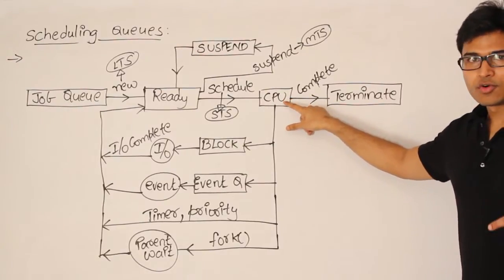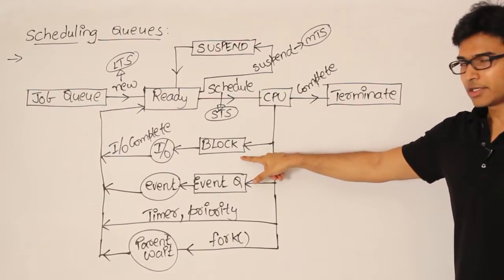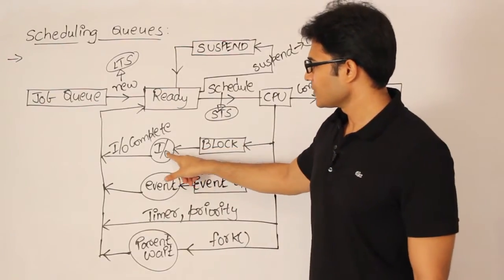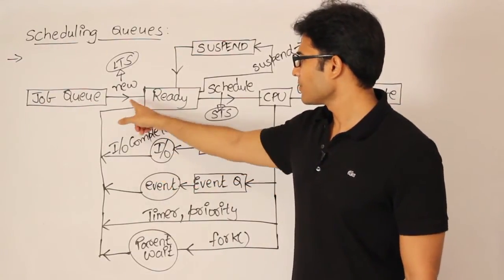Or sometimes it might need some I/O. Then it is going to block state. And it is going to be there until that I/O is finished. So once the I/O is completed, again it will come back to the ready queue.